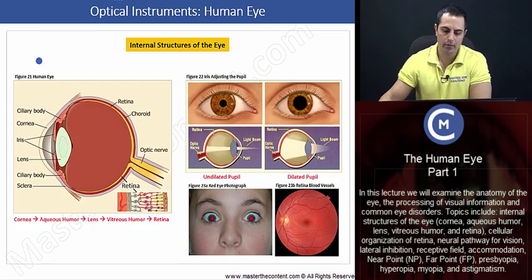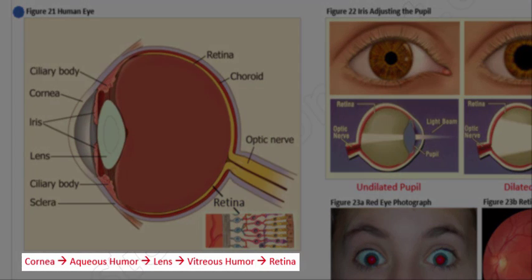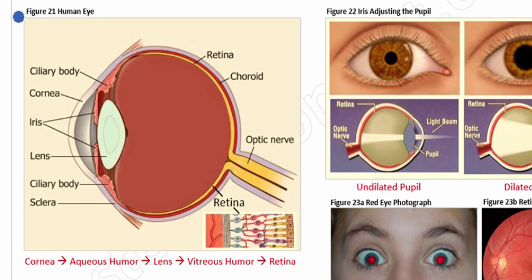Let's begin here with figure 21. Let's lay out the overall pathway to the brain. As light enters the eye, it passes through the cornea, the aqueous humor, the lens, and the vitreous humor to form a real image on the retina, where special cells — rods and cones — produce electrochemical signals that carry visual information to the brain through the optic nerve. The cornea, aqueous humor, lens, and vitreous humor are all transparent, which allows the light to pass unobstructively from the exterior through the eyeball and onto the retina.